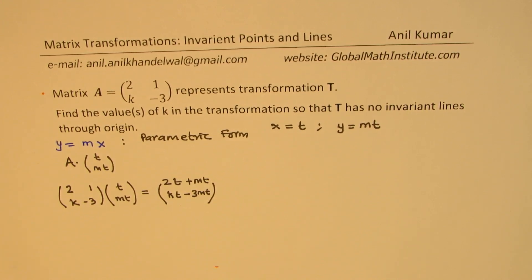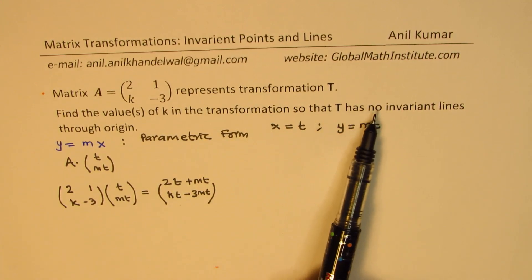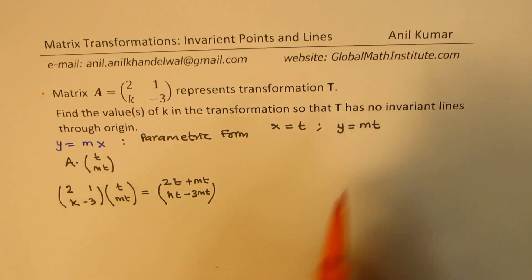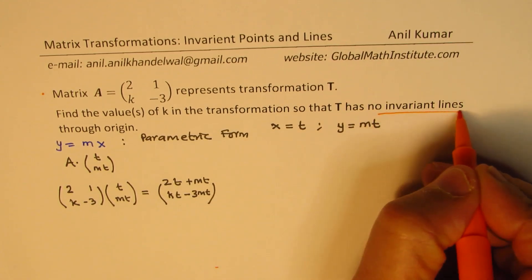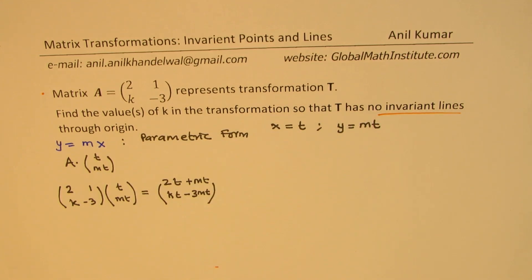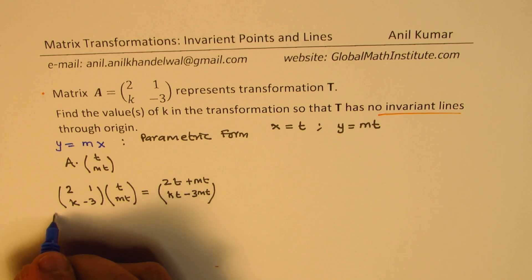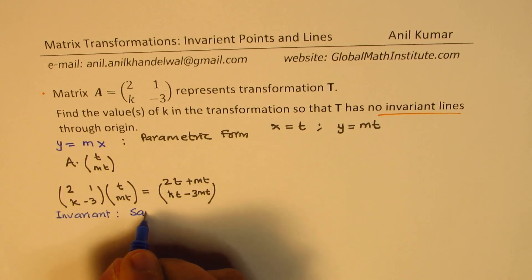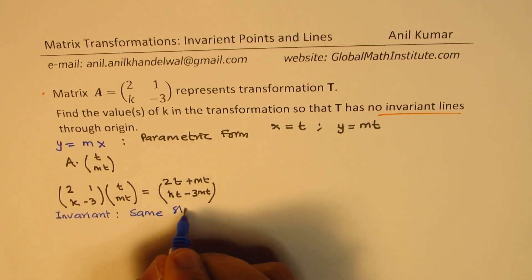Now we are looking for the transformation so that T has no invariant lines. Now let's first look into what are invariant lines. Invariant lines means we should have same slope. So invariant means same slope.